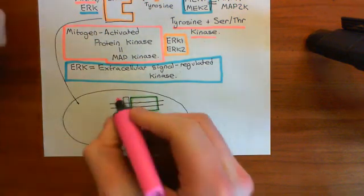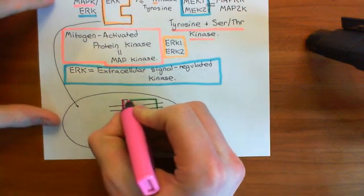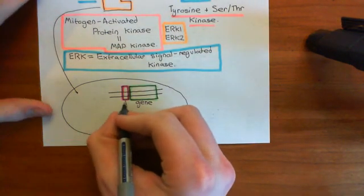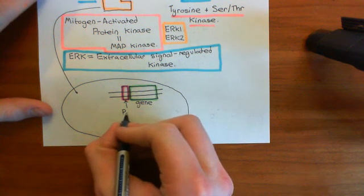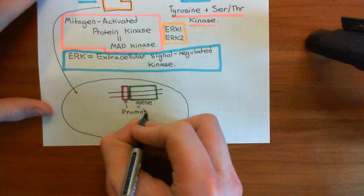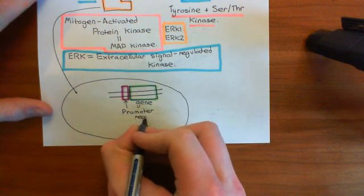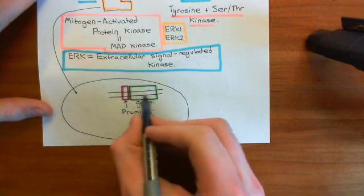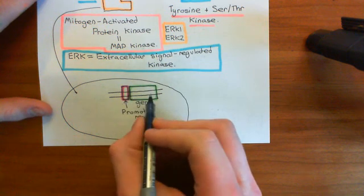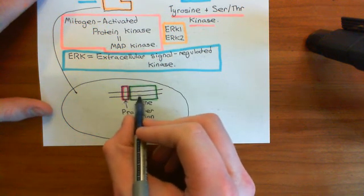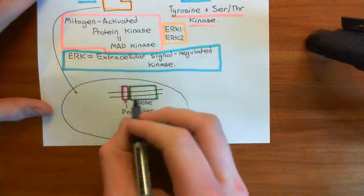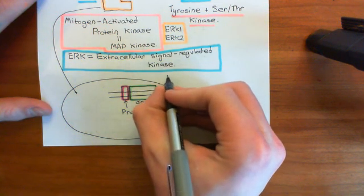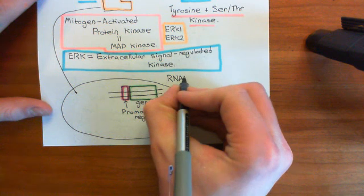Upstream of all genes in the eukaryotic genome, you have a little region known as the promoter region — I'll color this in purple. The promoter region is not involved in being translated itself; it's not going to be turned into a sequence of amino acids by a ribosome. However, it's extremely important in regulating how much of the downstream gene we actually transcribe, i.e., how much of the gene product we're going to make.